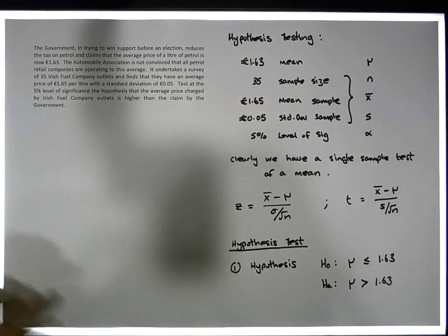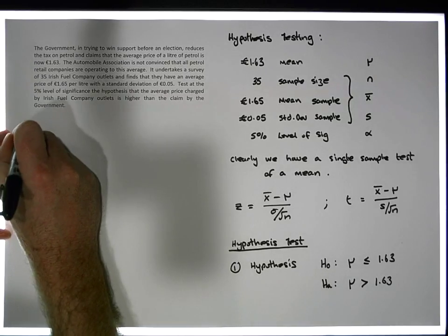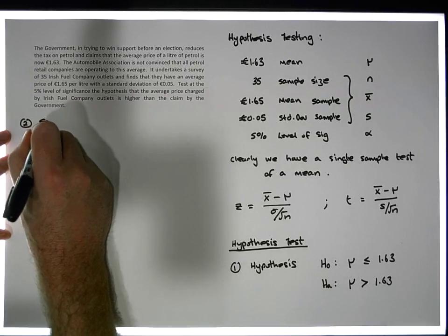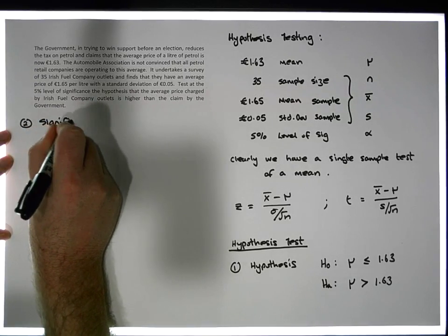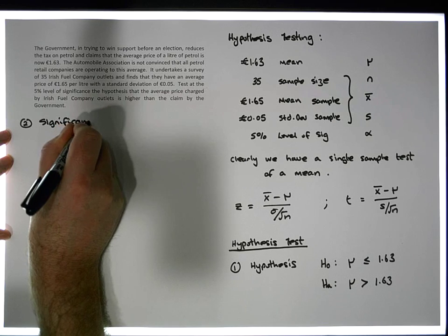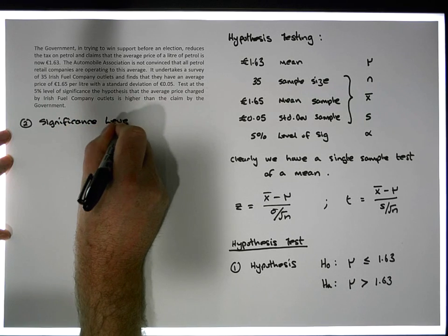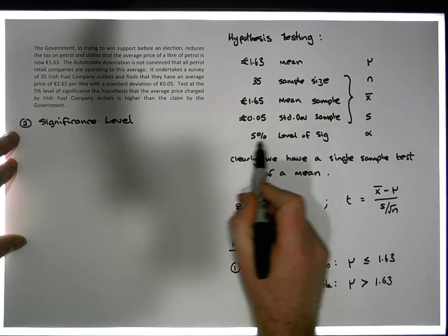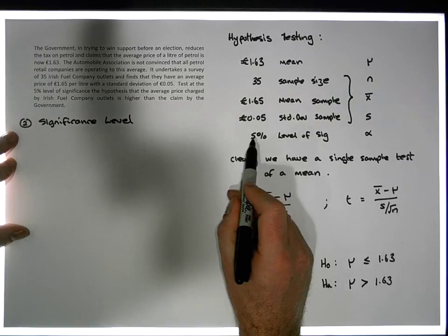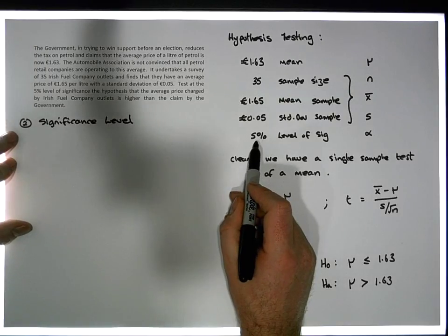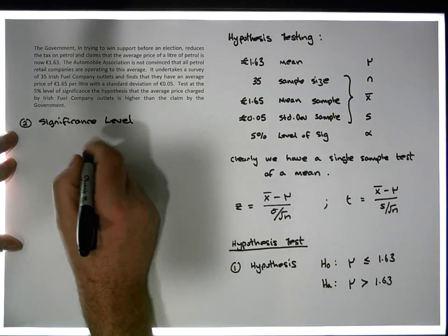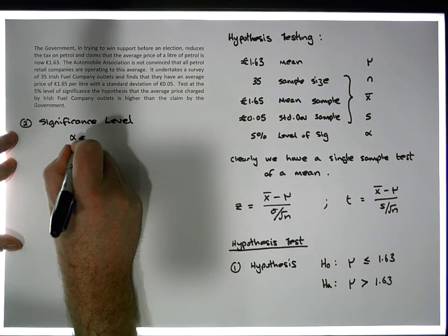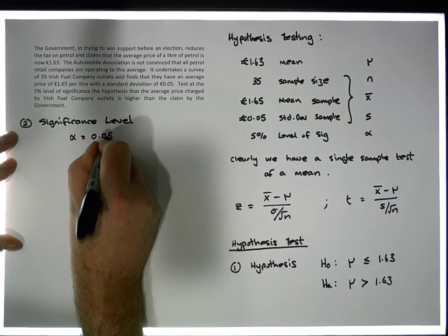Step two is to define our significance level. The significance level has already been given in the question: alpha is equal to five percent. As a decimal, that is alpha equals 0.05.